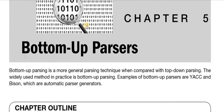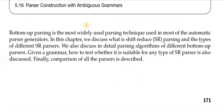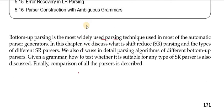Assalamualaikum class, today we are going to start our next chapter, that is chapter number 5: Bottom Up Parsers. Bottom up parsing is a more general parsing technique when compared to top down parsing. The widely used method in practice is bottom up parsing. Examples of bottom up parsers are Yacc and Bison — these are automatic parser generators. Bottom up parsing is the most widely used parsing technique using most automatic parser generators.